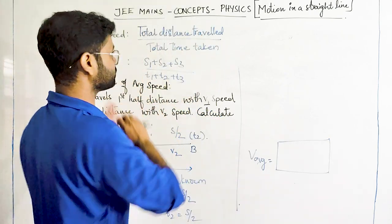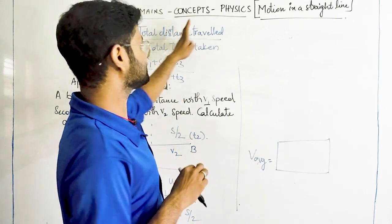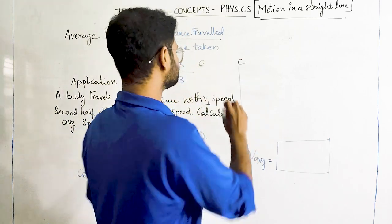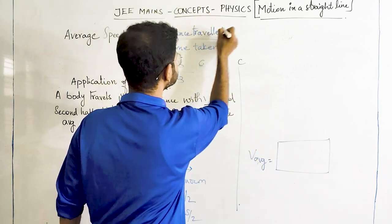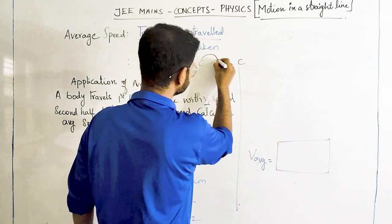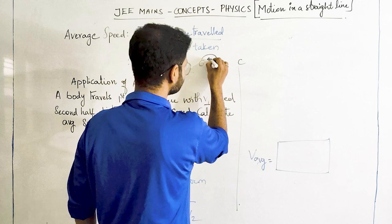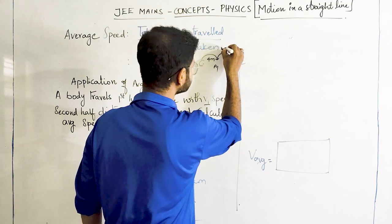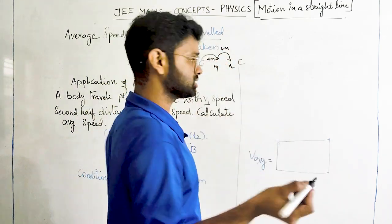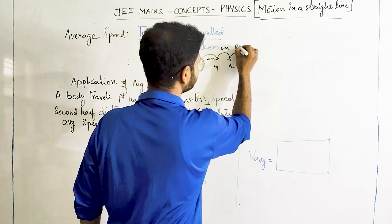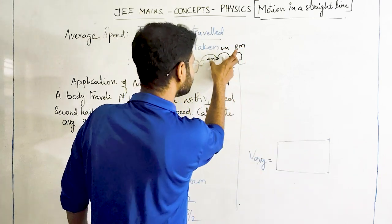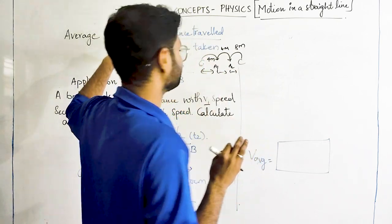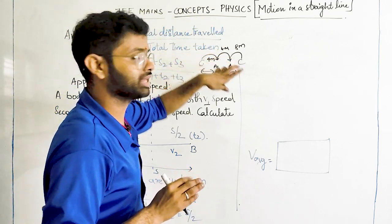So now what is average speed? We know that average speed is total distance travelled. Say suppose for example you are moving from Chennai to a location. The total distance you have travelled - from here you might have travelled a distance of 4 meters to point A1, from here to point A2 you might have travelled a distance of 4 meters, so from A2 to C you might have travelled a distance of 8 meters. So upon summing up this total distance and the time taken at each interval will give you the average speed, that is total distance travelled by total time taken.